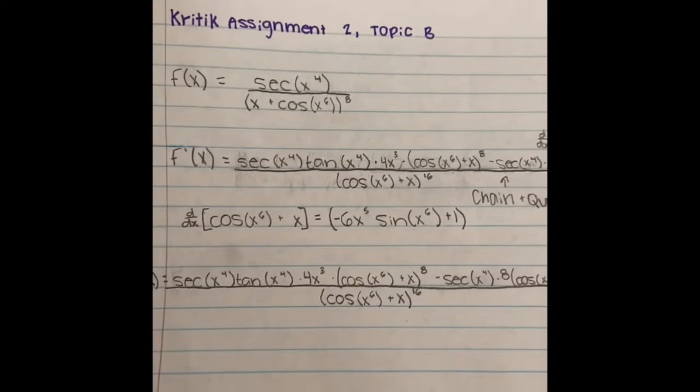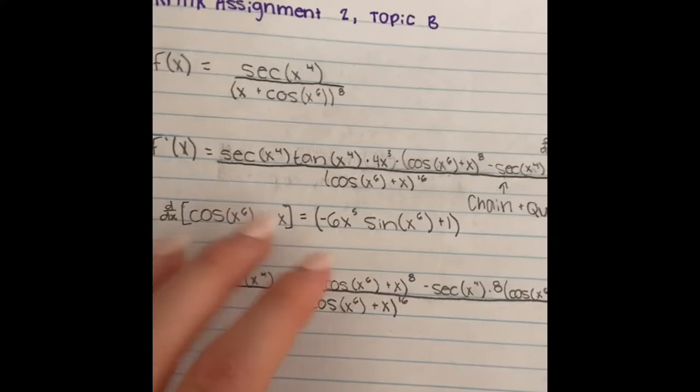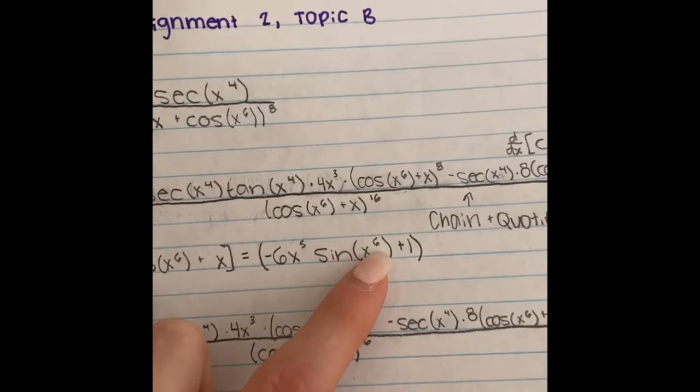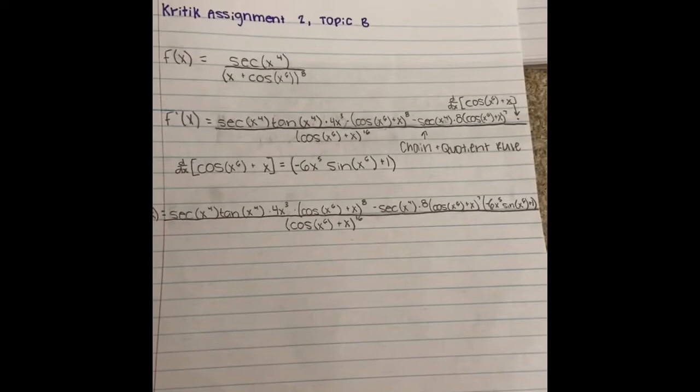Right here I just wrote out the derivative of cosine x to the sixth plus x, which would be negative six x to the fifth times sine x to the sixth plus one. Then putting it all together into this really long derivative.